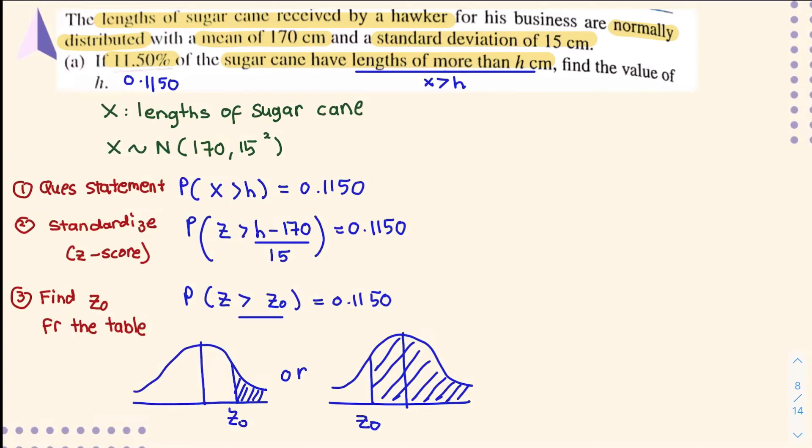Now logically, if your probability is 0.1150, which is much less than 0.5, is it logical to put it at this particular part? No, it is not logical because half of it is already 0.5, so if you add more to the middle region, it will be much greater than 0.5.